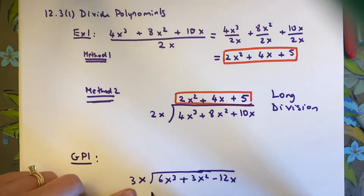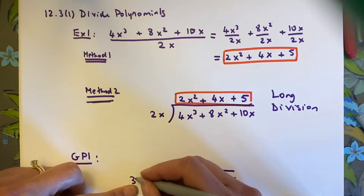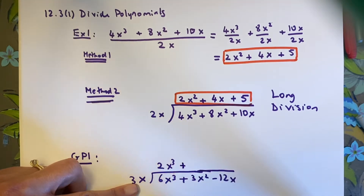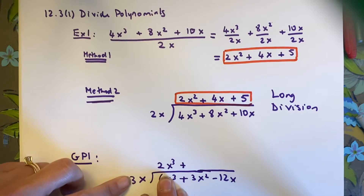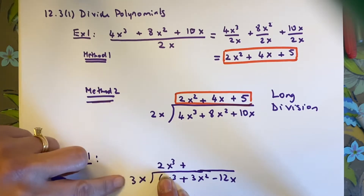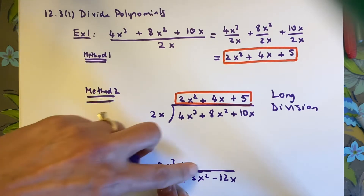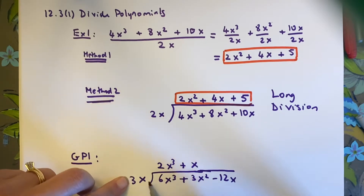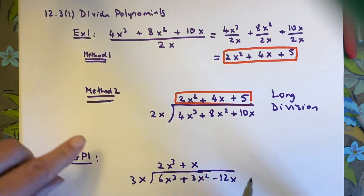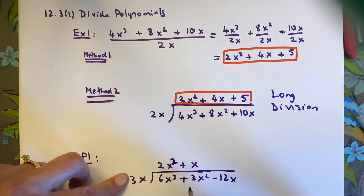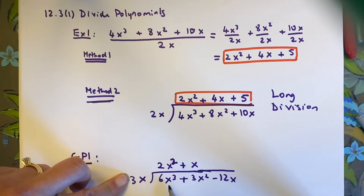What times 3x gives me 6x cubed? Well, 3 times 2 is 6, and x squared times x gives me x cubed — so 2x squared. For the second term, what times 3x gives me 3x squared? That's x, since x times 3x equals 3x squared. Let me verify: 2x squared times 3x — that gives 6x cubed, yes. Be sure to check back and confirm your answer makes sense.